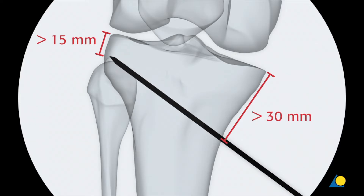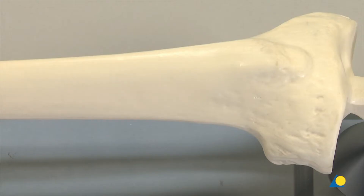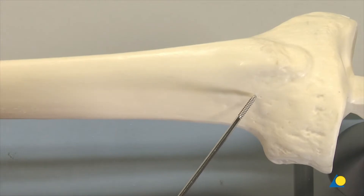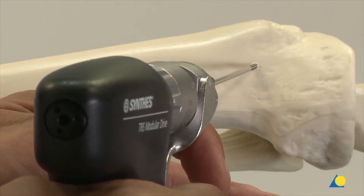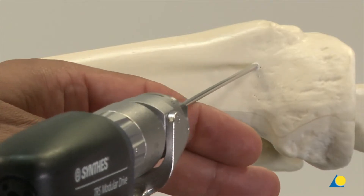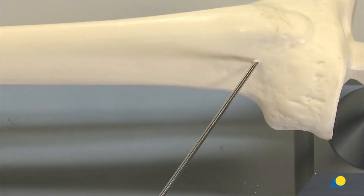The wires must run parallel and are aimed towards the previously defined hinge point. When the two wires are placed, it is important to ensure that there is sufficient space cranial to the saw cut for the four locking screws in the head of the Tomofix plate, leaving at least 30 mm to the ridge of the medial tibial plateau. The first K wire is inserted proximal to the cranial border of the pes anserinus. The wires must be inserted exactly to the depth of the lateral tibial cortex.